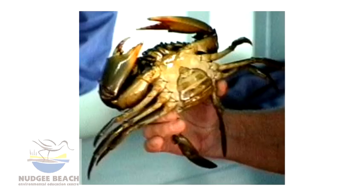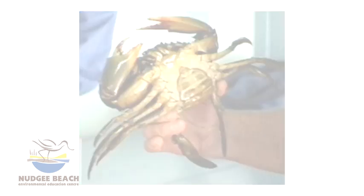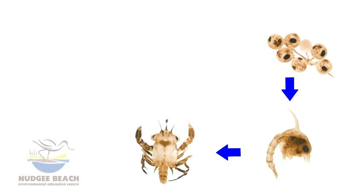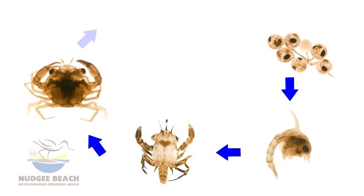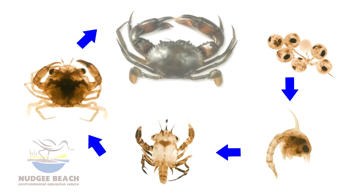Female mud crabs will carry up to six million eggs at any time. This allows for many of them not to make it through the hatching and growing stages. Mud crabs have a life cycle similar to that of a frog, in that the animal that hatches out of the egg does not look like the adult crab — in actual fact it looks more like a mosquito wriggler.